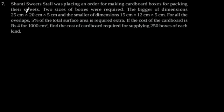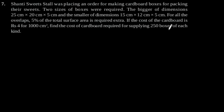Exercise 13.1, Question No. 7. Shanti Sweets Stall was placing an order for making cardboard boxes for packing their sweets. Two sizes of box were required: the bigger of dimension 25 cm × 20 cm × 5 cm and the smaller of dimension 15 cm × 12 cm × 5 cm. For all the overlaps, 5% of the total surface area is required extra. If the cost of the cardboard is Rs. 4 for 1000 cm², find the cost of cardboard required for supplying 250 boxes of each kind.